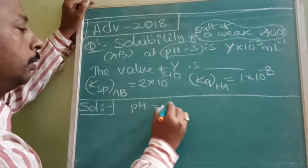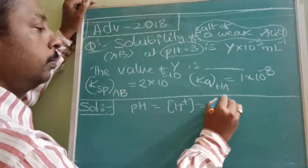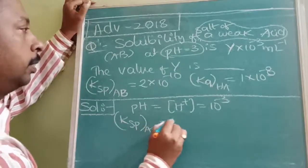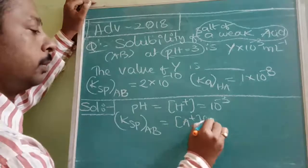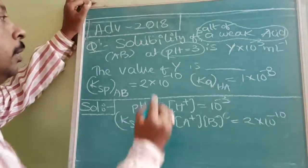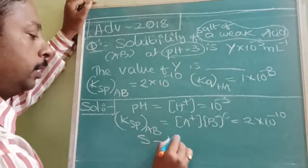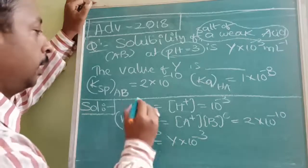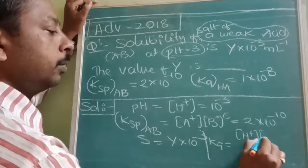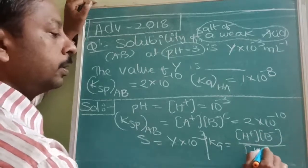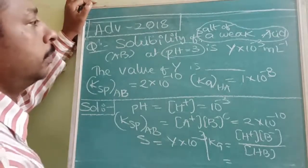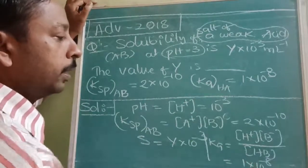If pH = 3, then H⁺ concentration = 10⁻³. KSP of AB = [A⁺][B⁻] = 2 × 10⁻¹⁰. Solubility S = Y × 10⁻³. The KA formula is: KA = [H⁺][B⁻] / [HB] = 1 × 10⁻⁸. These are all the values given.